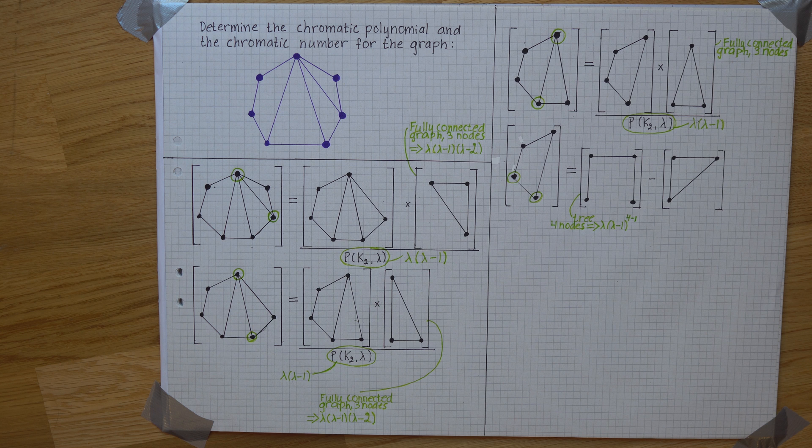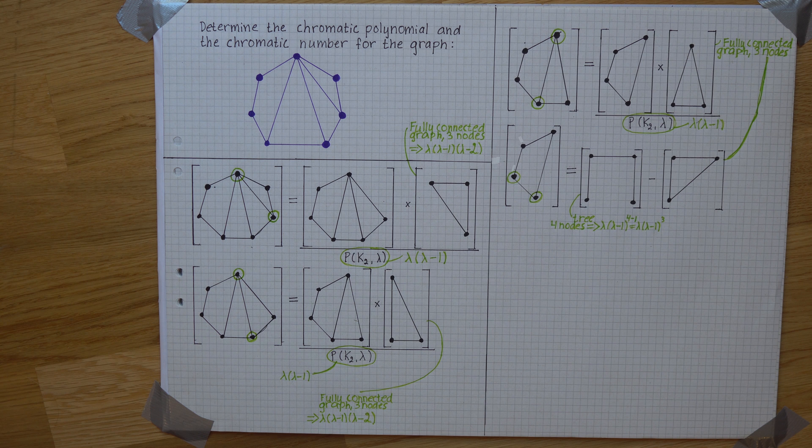This gives us lambda times lambda minus 1 to the power of the number of nodes in the tree minus 1. And this is the same as above, a fully connected graph with three nodes.